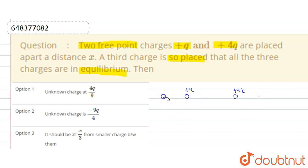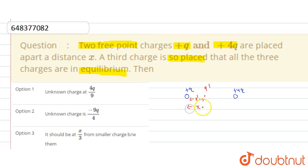We can only place the third charge in between the two charges. Let us consider a charge q' placed at a distance x' from the +q charge. Since the total distance between the charges is x, the distance from q' to the +4q charge would be x minus x'.